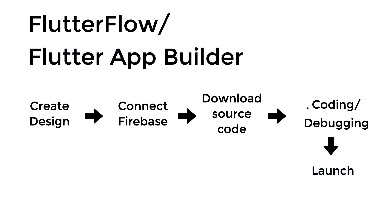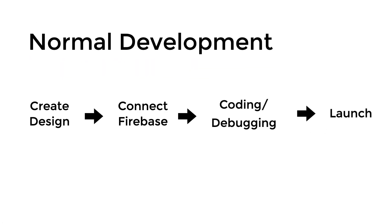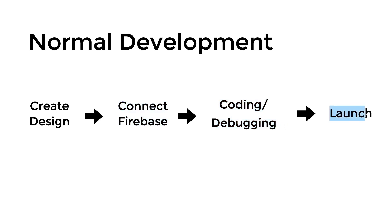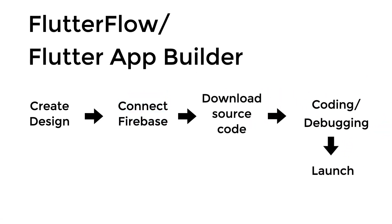So these are like five steps and in a big picture view it takes a lot of steps to use this Flutter app builder. Now if you were to just use normal development you cut the step of downloading the source code. You will create a design from a designer, connect all your different third parties, do the coding, and then launch it. So if you reiterate it, normal development is actually a little bit faster than using Flutter Flow or a Flutter app builder.